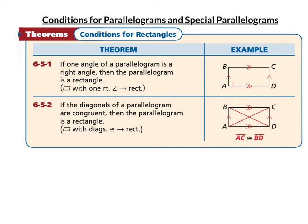When is a parallelogram a rectangle? If it has one right angle, it's a rectangle. Since it's a parallelogram, opposite angles are congruent, so angle A and angle C are automatically both right angles. Consecutive angles are supplementary, so the remaining angles must also each be 90 degrees. We have four right angles — therefore it's a rectangle. Also, if a parallelogram has congruent diagonals, then it's a rectangle. Remember: the rectangle is the shape that has congruent diagonals.